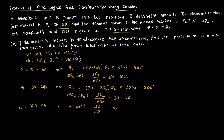We can now write the two FOCs. The first is MR1: 50 minus 10Q1 equals marginal cost of 10. The second is MR2: 30 minus 4Q2 equals 10 as well.